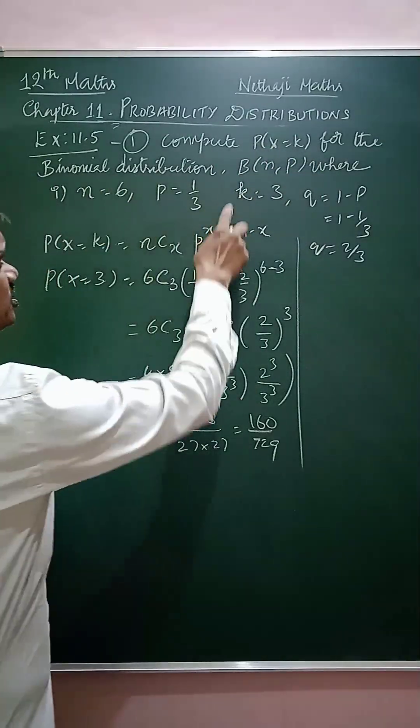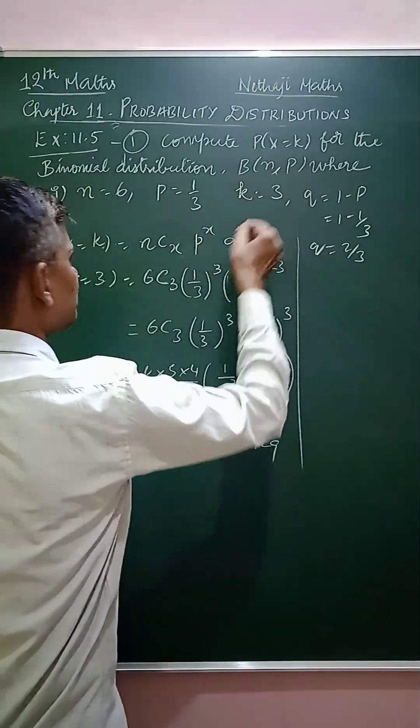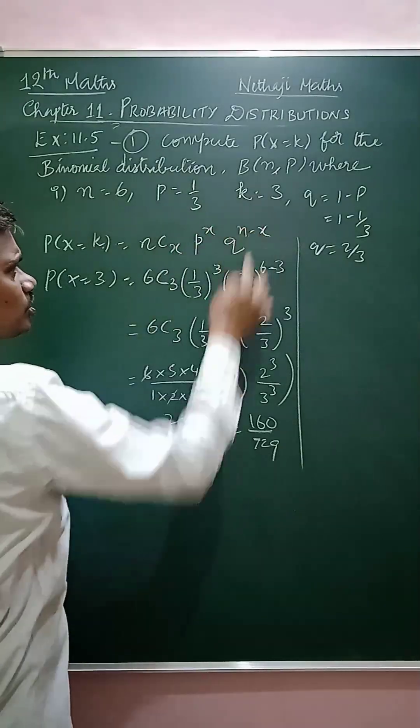Compute P(x=k) for the binomial distribution B(n,p) where n equals 6, p equals 1/3, and k equals 3.